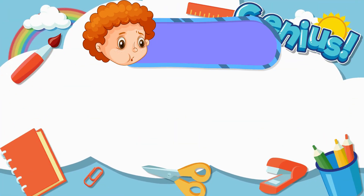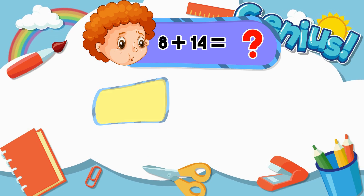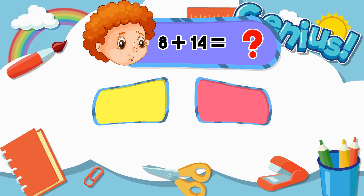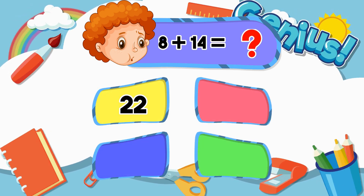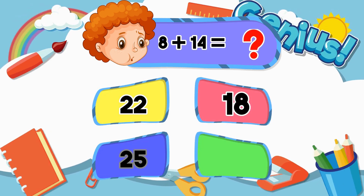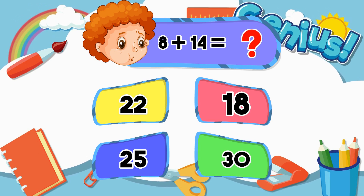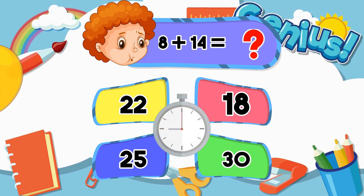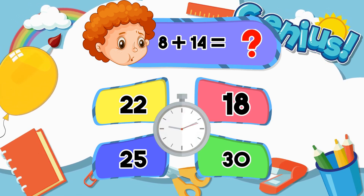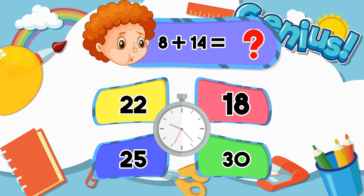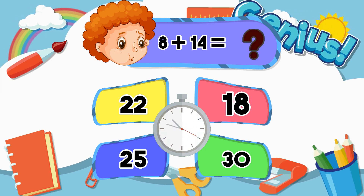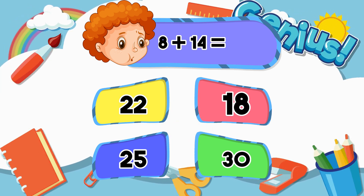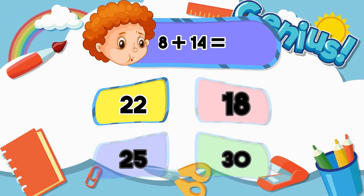What is 8 plus 14? 22, 18, 20, 30. Answer: 22.